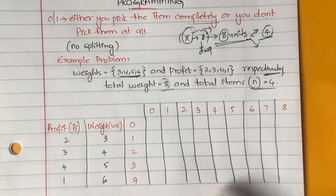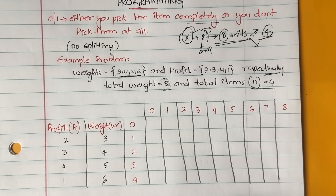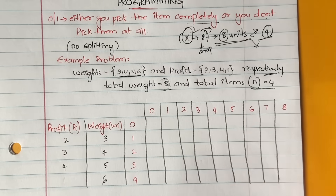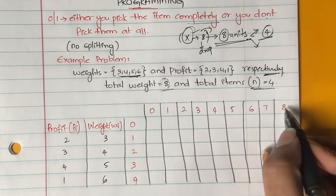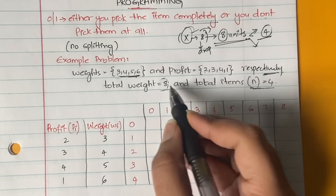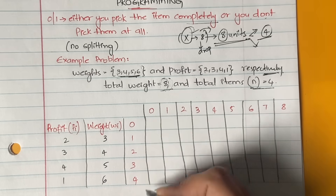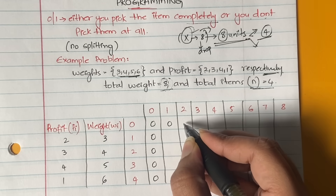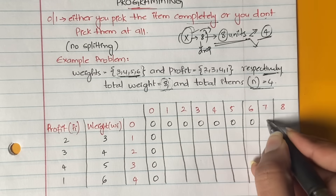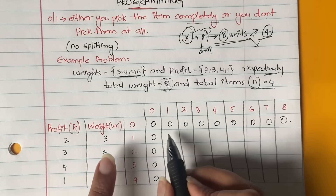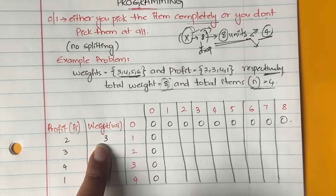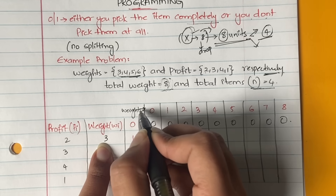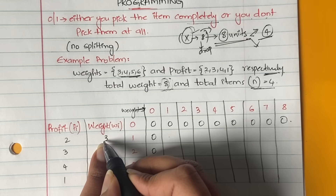If we fill up this table, 90% of the problem is done. The first row and first column are always kept as zeros. We took columns 0 to 8 because the total weight capacity is 8. Fill the first row and first column with all zeros.